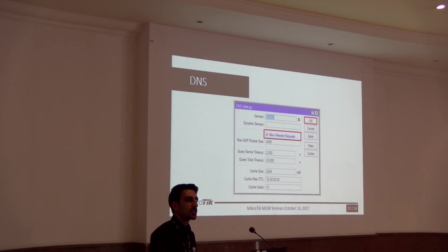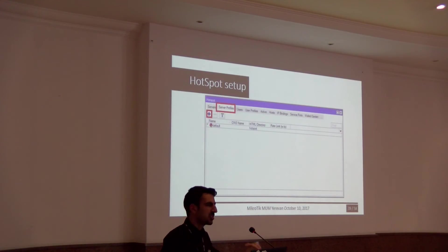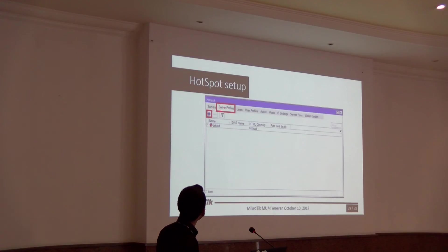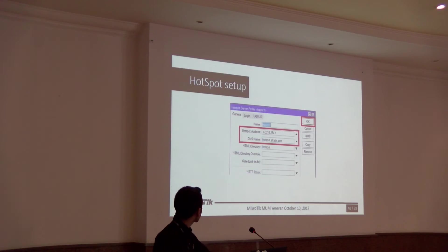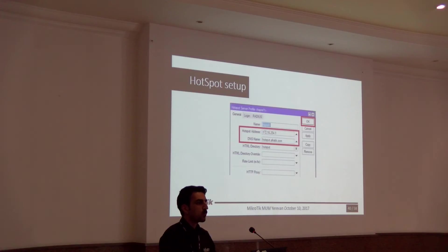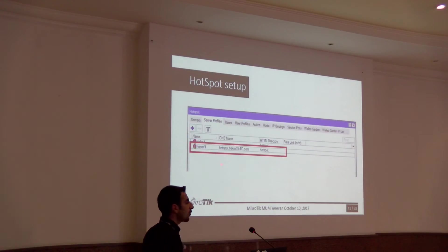To configure Hotspot in advanced mode, go to the IP menu, click on Hotspot, then go to Server Profiles and click Add. In the window, enter the IP address of the Hotspot router that is connected to the core router. Set a DNS name for the Hotspot — the DNS name should be in FQDN format, for example hotspot.afrotik.com. After that, you have a server profile for the Hotspot.